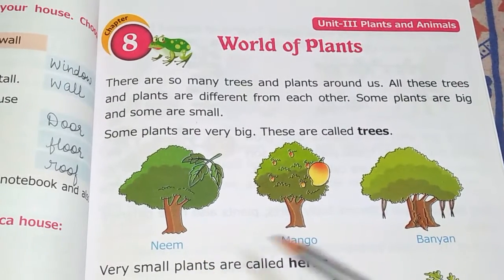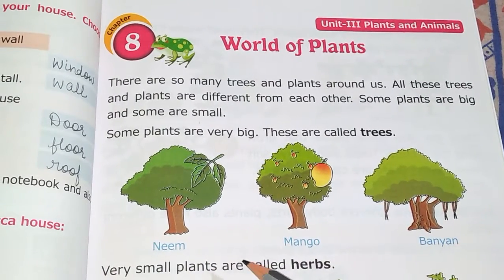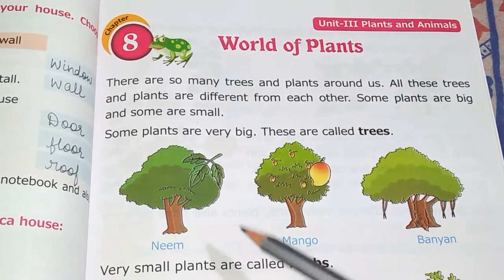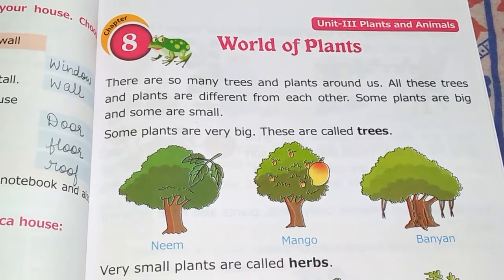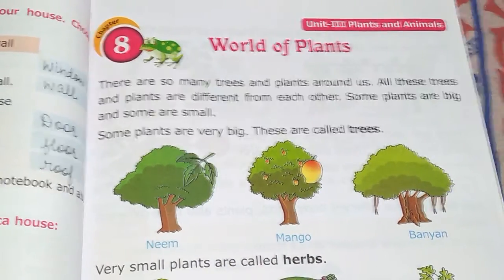Plants like neem, mango, and banyan are very big, so they come under the category of trees. They are known as trees.